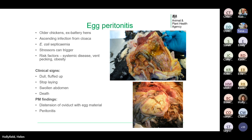The clinical signs are fairly non-specific — you may just see a dull, fluffed-up chicken that has stopped laying. Affected birds may have a swollen abdomen or may just present as dead birds. At post-mortem, typical findings are distension of the oviduct with inflammatory debris and egg material, and there's often an accompanying peritonitis with smelly contents in the peritoneal cavity. The top photo shows free egg material in the peritoneal cavity with fibrinous deposits over the bowel, and the bottom picture shows caseous material in the oviduct.